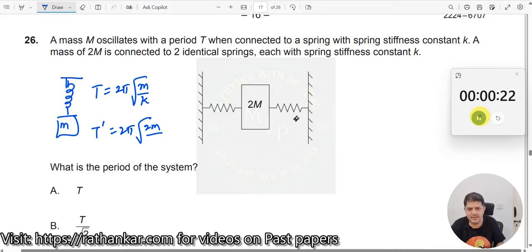Now, what should be the value of k? You see, these two can be approximated to something like this. So whenever two springs are connected in parallel, then the effective spring constant is nothing but k1 plus k2.